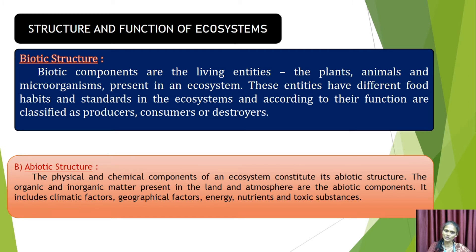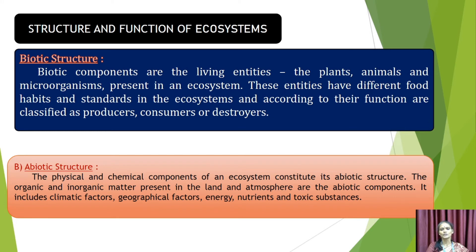Abiotic structure is the physical and chemical components of an ecosystem. It constitutes organic and inorganic matter — non-living things. In the land and atmosphere are the abiotic components. It includes climatic factors, geographical factors, energy, nutrients, and toxic substances.